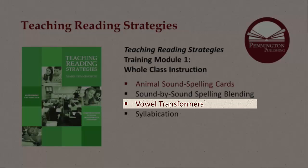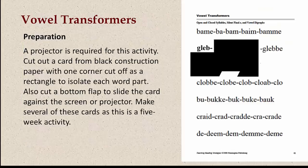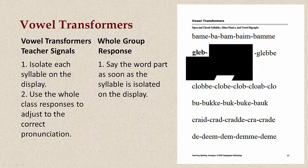The third whole-class instructional activity is introduced in the ninth week of instruction for both the full-year and half-year intensive programs. Students practice the vowel transformers daily for five weeks. Vowel transformers is an interactive, whole-class activity designed to teach the open, closed, silent final E, and vowel team syllable rules. The rules are learned inductively through examples. Nonsense syllables are used in this activity because remedial readers frequently have extensive sight word vocabularies. A projector is required. Cut out a card from black construction paper with one corner cut off as a rectangle to isolate each word part, and cut a bottom flap to slide the card against the screen or projector. Make several of these cards, as this is a five-week activity.